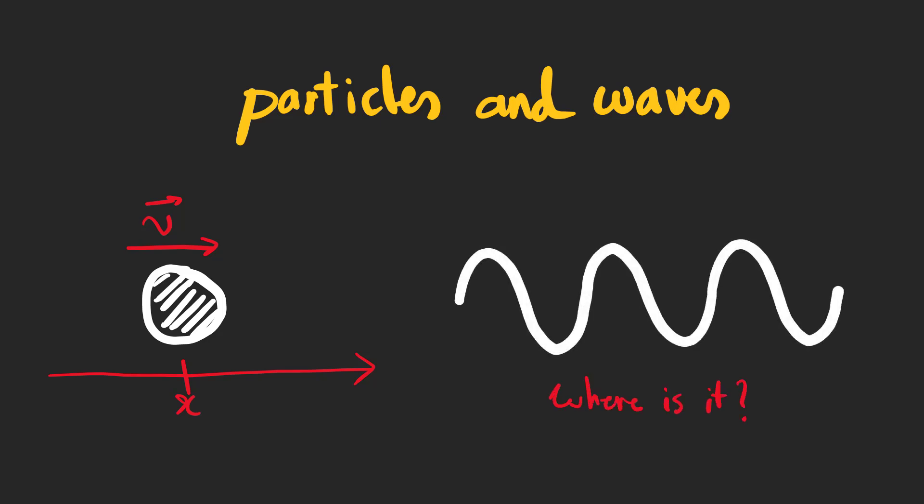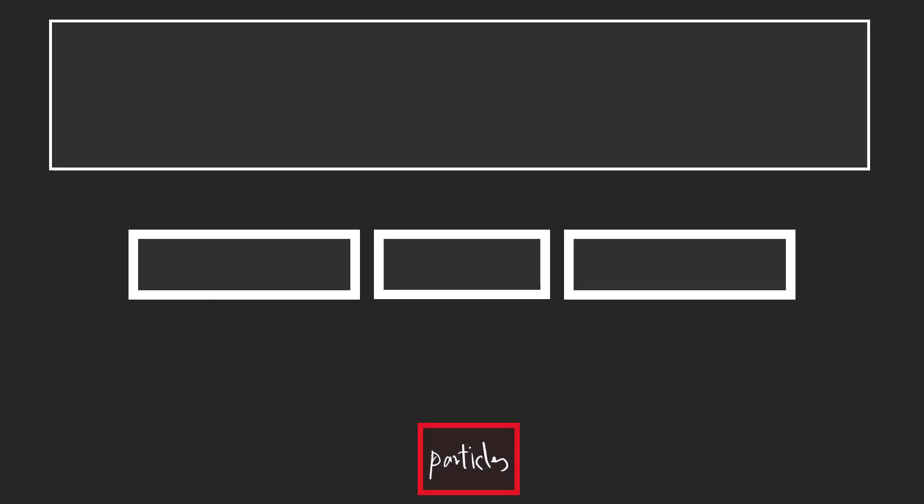But waves are not localized, and we cannot specify an exact location for them. However, in the quantum world, particles sometimes follow the rules that we usually use for waves. They actually act like waves, for example, the double-slit experiment for electrons.